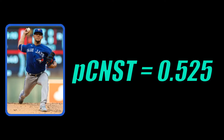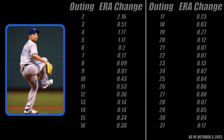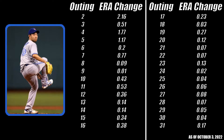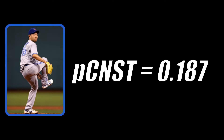But let's see where Kikuchi ends up. Ideally, he would be much closer to Manoa in consistency, since he's been consistently bad. Here is Yusei Kikuchi's ERA changes throughout the year, giving a consistency of .187. The stat seems to hold up pretty nicely — it's shown exactly what I've seen as a Jays fan this year.